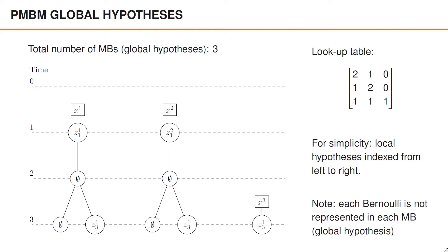For simplicity, the local hypotheses are indexed from left to right. If you want to, you can pause the video now and confirm that these three are indeed the three possible ways to associate these measurements when we have a PMBM filter.